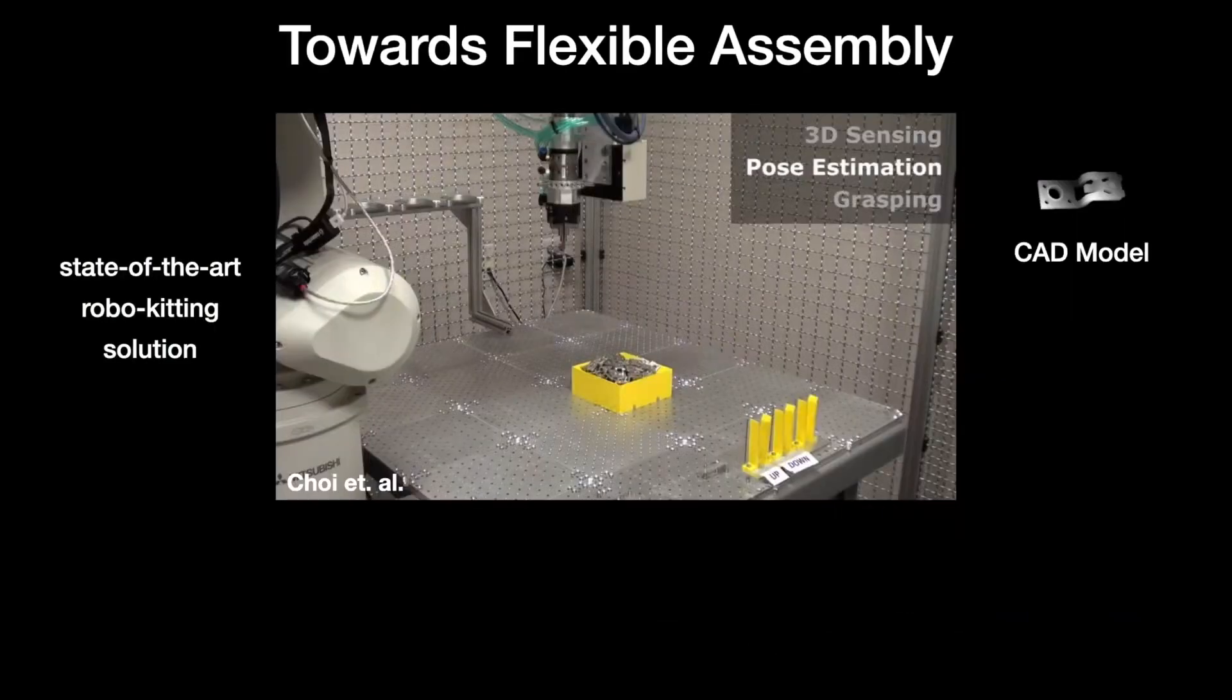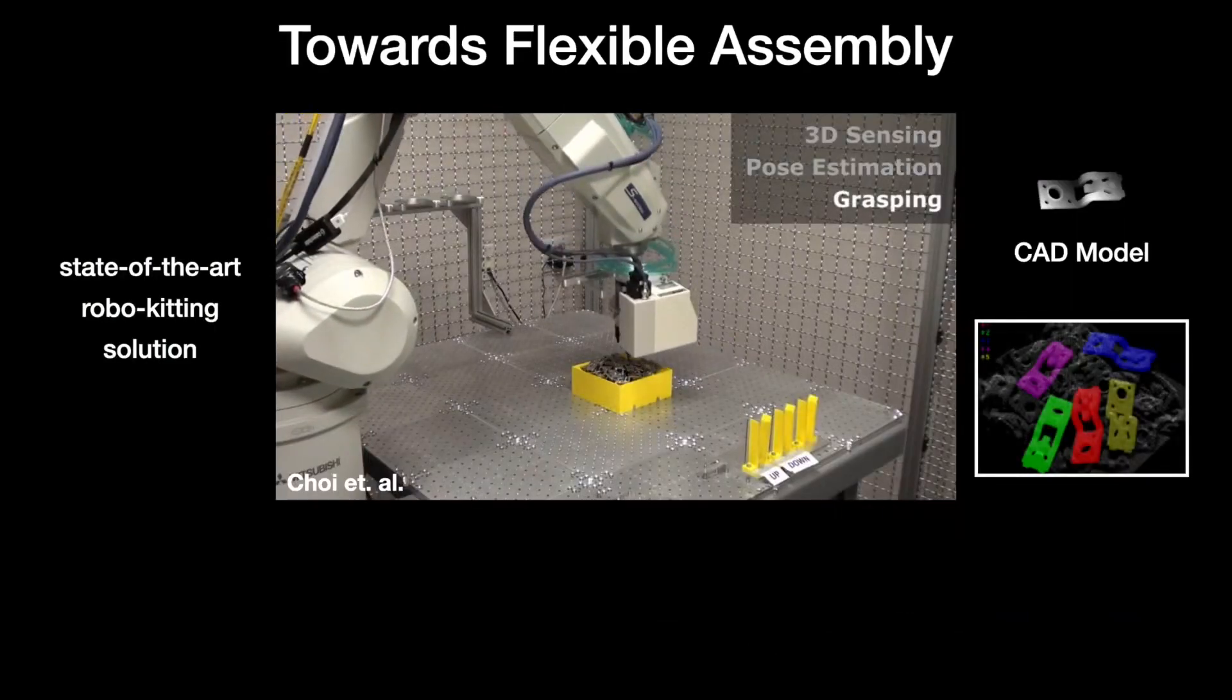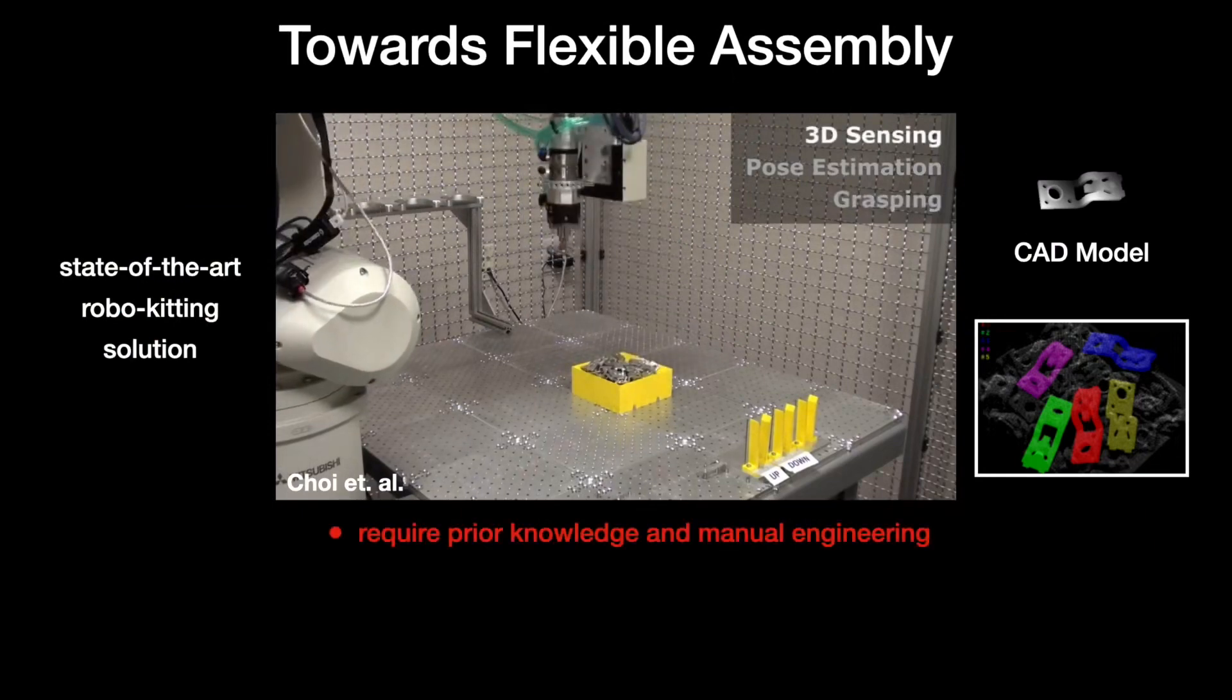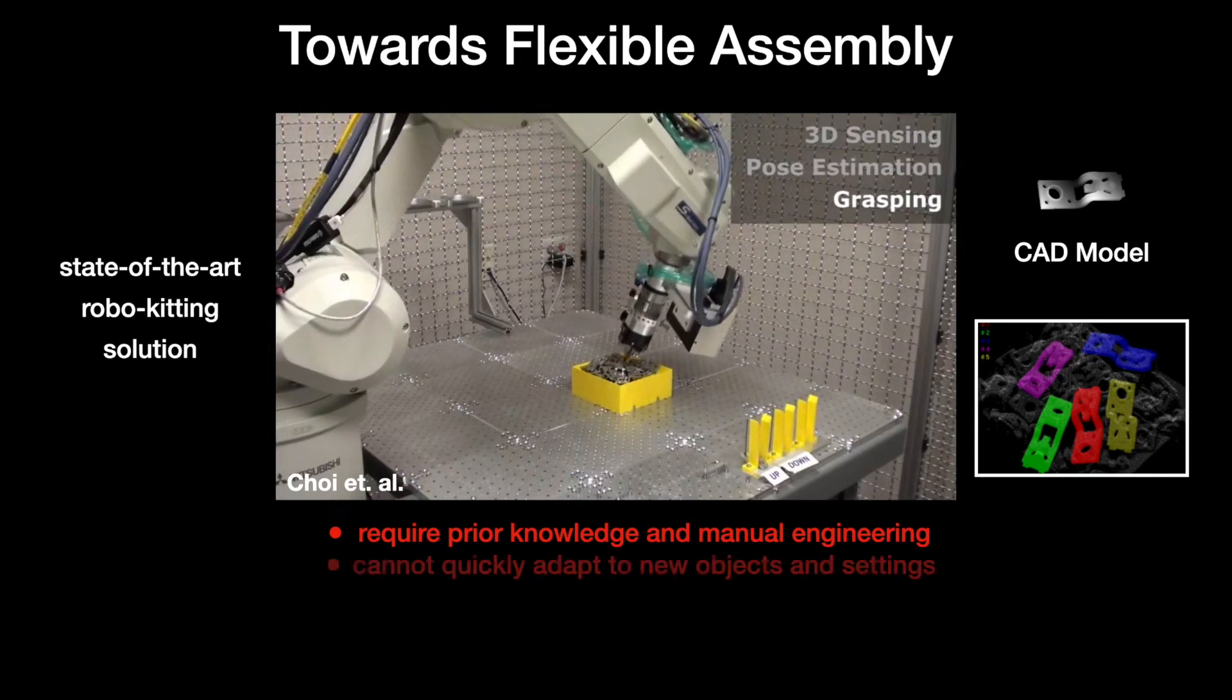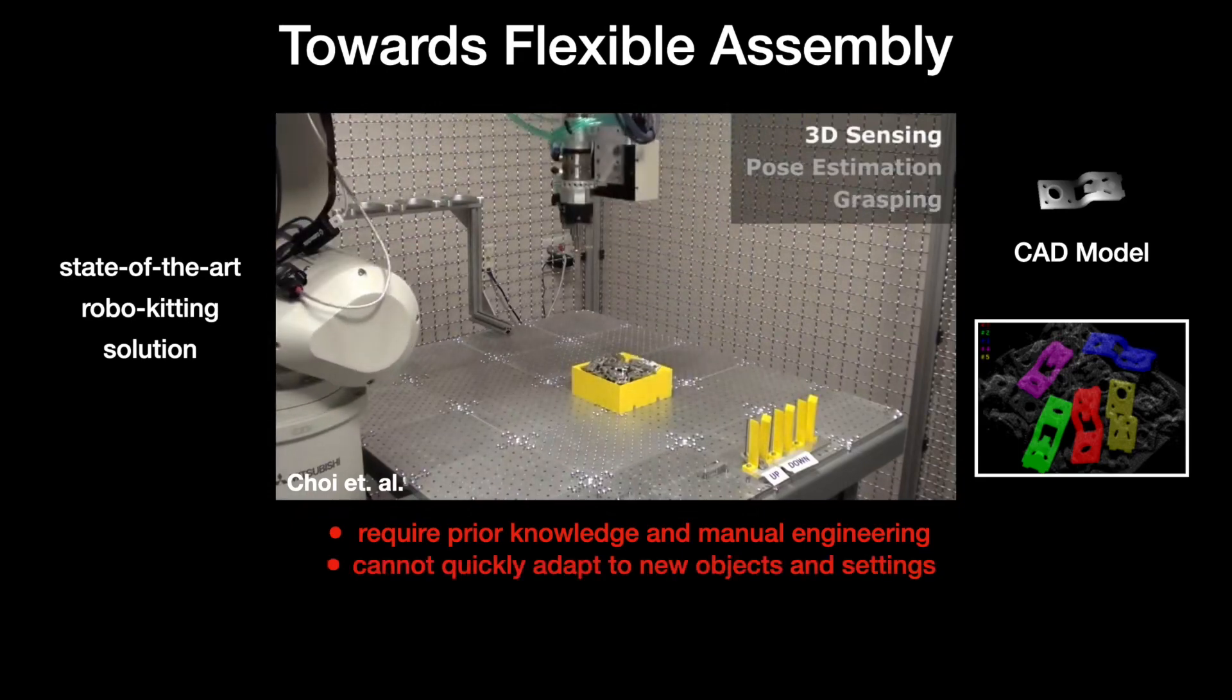Unfortunately, this concept is often overlooked in many modern assembly systems, which typically rely on lots of prior knowledge like 3D models to estimate object poses. This hinders their adaptability to tasks with new objects they have never seen before.